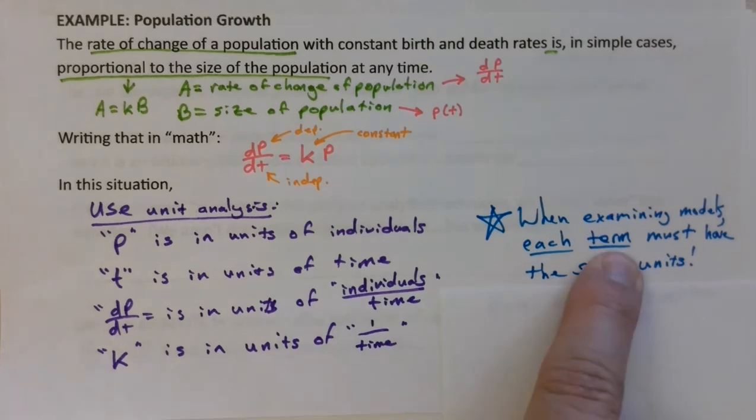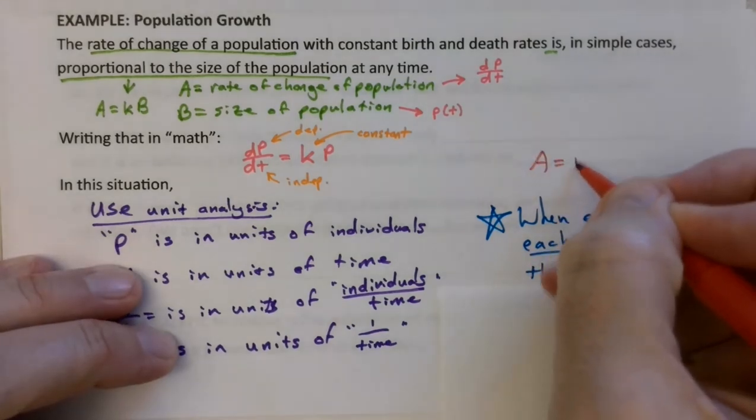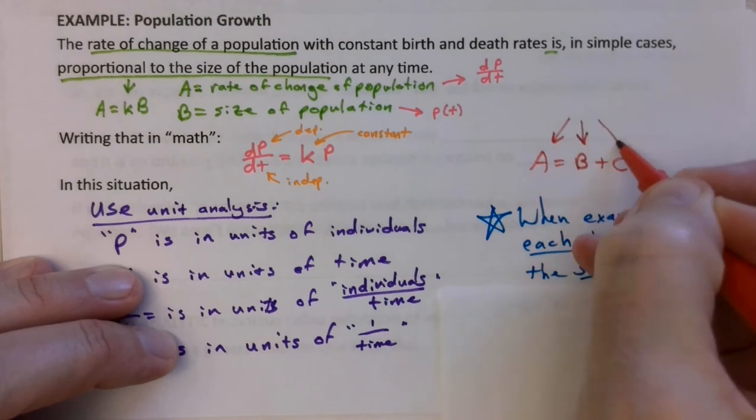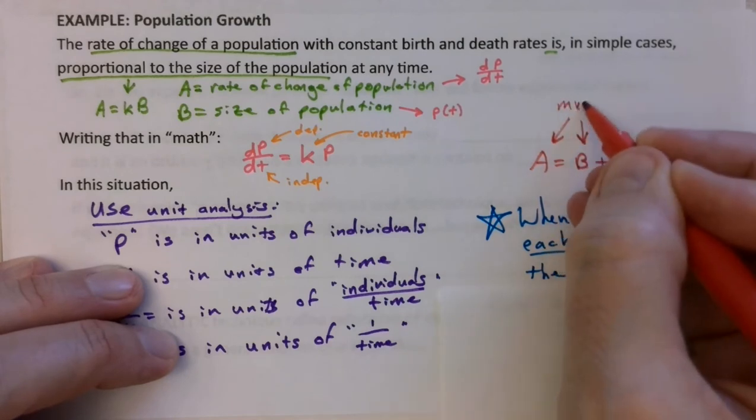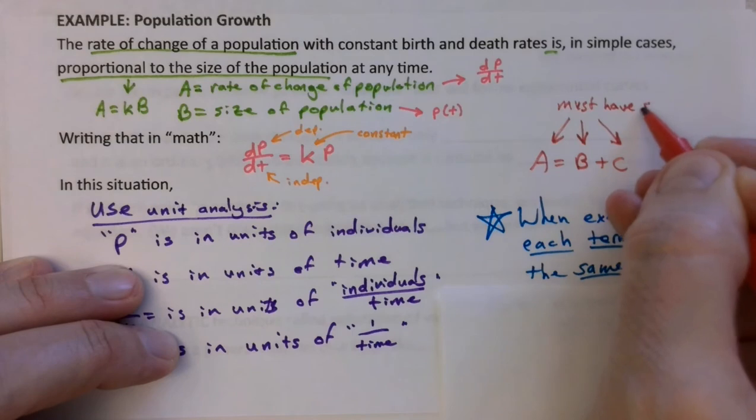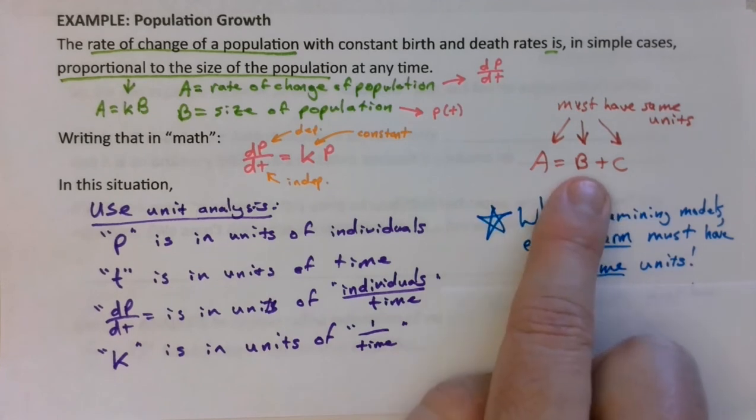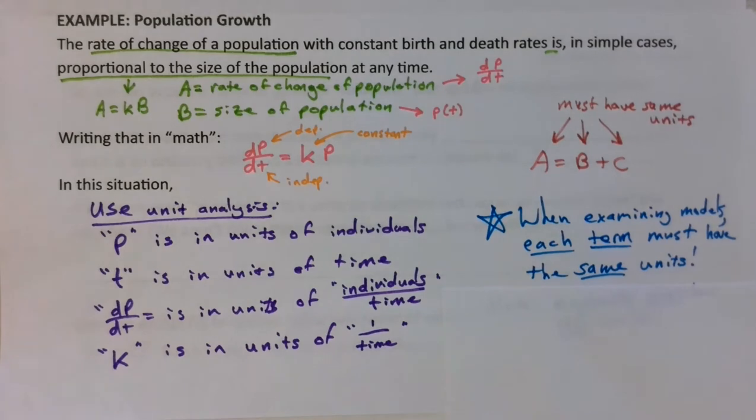So you have to have the same units to be able to add or subtract quantities. And that's what we mean by terms, each term. So if you have an equation that looks like A equals B plus C, then all three of these terms must have the same units. And that means if we know the units for A are miles per hour, then that means B and C must be in miles per hour or else it cannot be a functional equation.